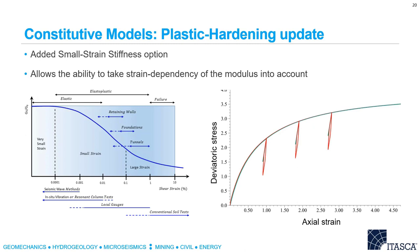The plastic hardening model you're probably already familiar with. What's been added is the small strain stiffness option. In real life, shear stiffness generally decreases with increasing shear strain — this is what the plot on the left shows. Lab test samples are usually subjected to fairly large strains, so you might get a shear modulus that is lower than what you really want because in situ there will be less strain. This new option allows you to specify a dependency of shear stiffness on shear strain. We've also included different stiffnesses for loading and unloading, which allows hysteretic loops as shown on the right plot.